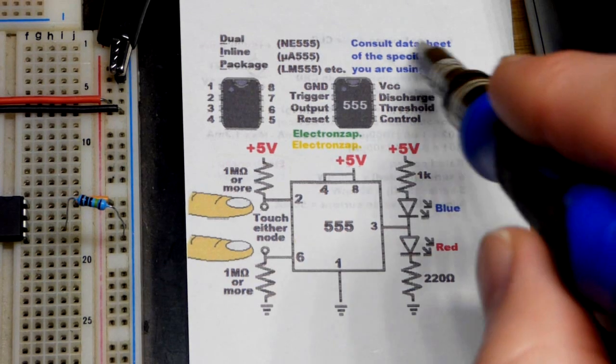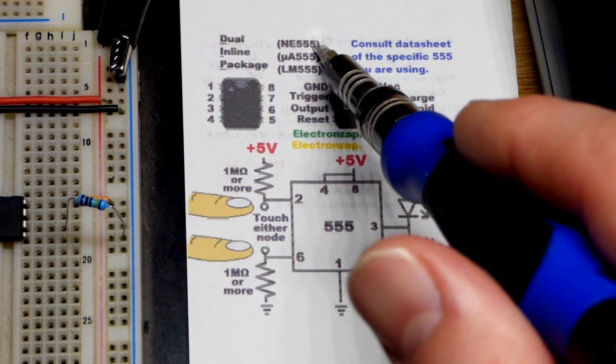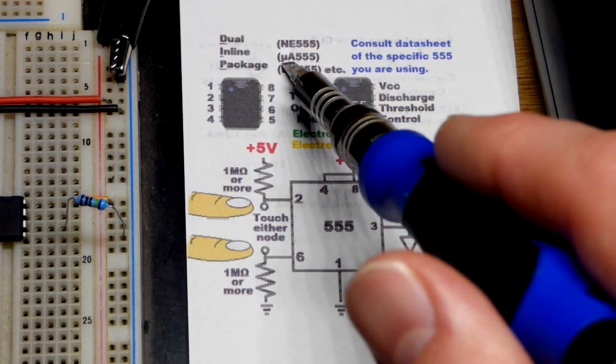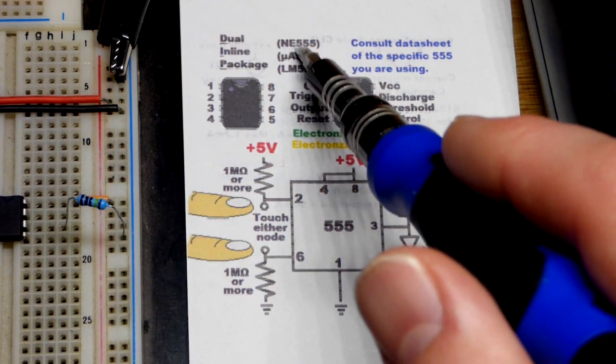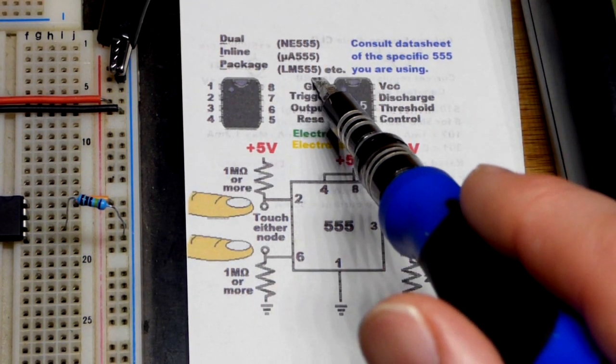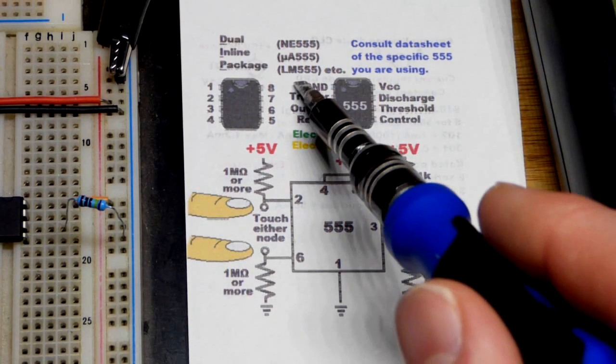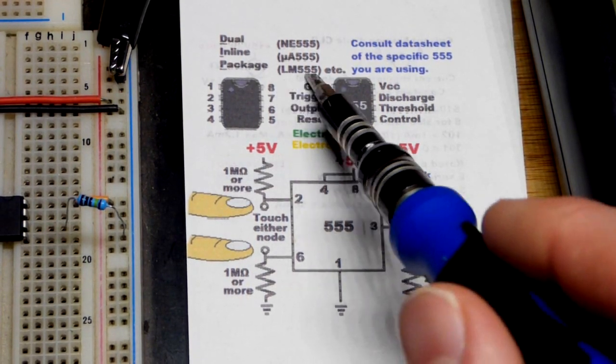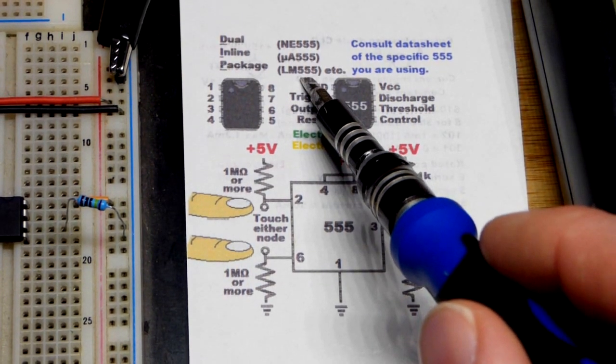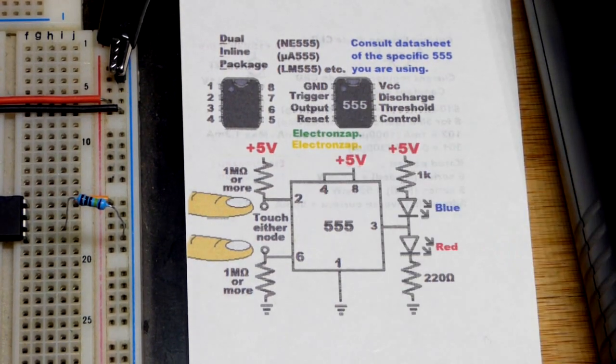I also added, make sure you consult the data sheet for the particular 555 you're using. If you're used to using NE555, the UA555 should work pretty much exactly the same. I'm not sure what their difference is. LM555 is a CMOS version, so it has different output capabilities is the main thing. I'm not going to go into detail here, but if you're using a 555 that you're not familiar with, different letters, make sure and check the data sheet and check their limitations.